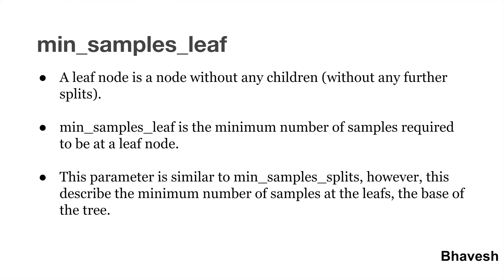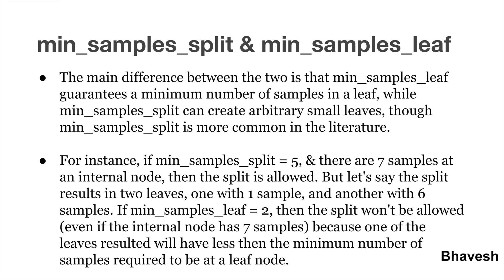The next hyperparameter is min_samples_leaf. A leaf node is a node without any children, so you cannot split it further. min_samples_leaf is the minimum number of samples you can specify to term a given node as a leaf node so that you don't split it further. For example, if you start with 10,000 samples and reach a node with just 100 samples, there is no point splitting further as you would tend to overfit. The main difference between the two is that min_samples_leaf guarantees a minimum number of samples in a leaf, while min_samples_split can create multiple arbitrarily small leaves.